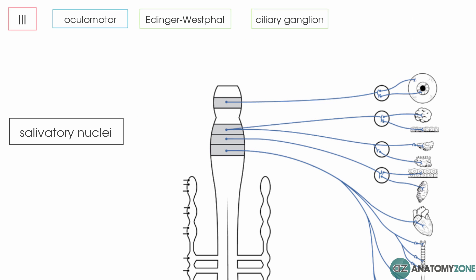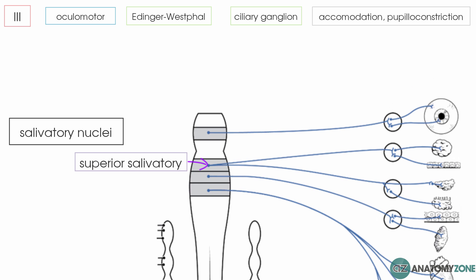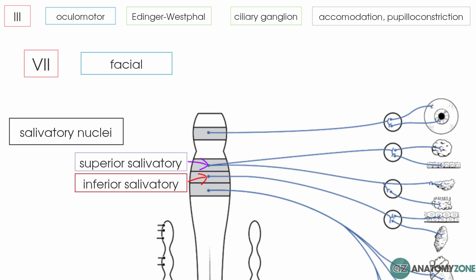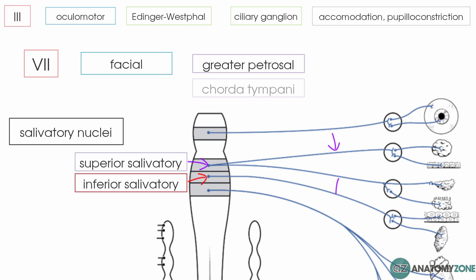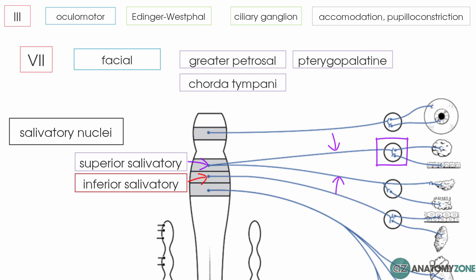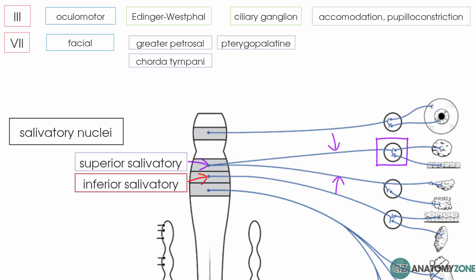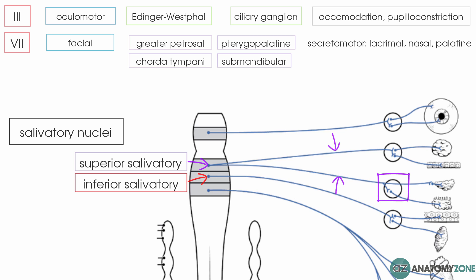Next are the salivatory nuclei. The superior salivatory nucleus gives rise to the facial nerve, and there are two branches relevant to the parasympathetic division: the greater petrosal nerve and the chorda tympani. The greater petrosal nerve synapses in the pterygopalatine ganglion, providing secretomotor function to the lacrimal glands and the nasal and palatine glands. The chorda tympani extends to the submandibular ganglion, which provides secretomotor function to the submandibular and sublingual glands.